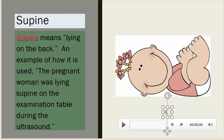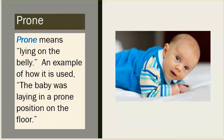Supine means lying on the back. Example: the pregnant woman was lying supine on the examination table during the ultrasound. Prone means lying on the belly. Example: the baby was lying in a prone position.